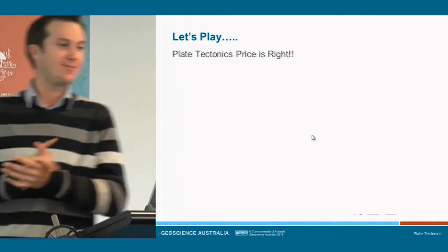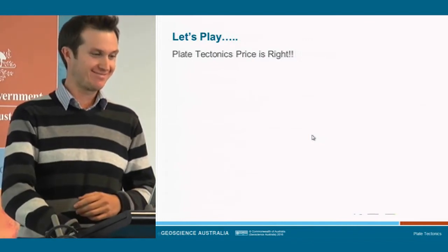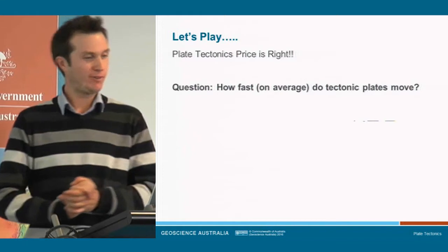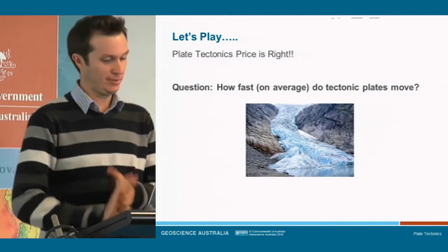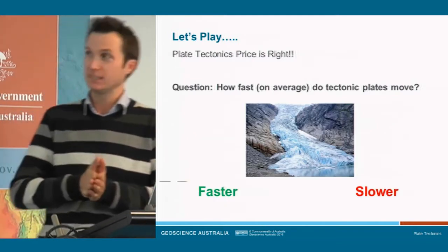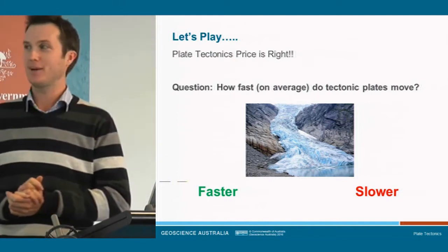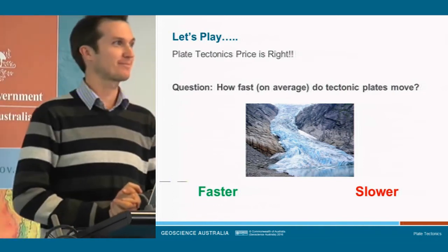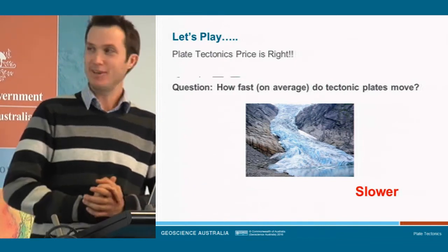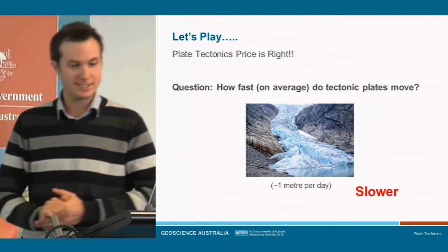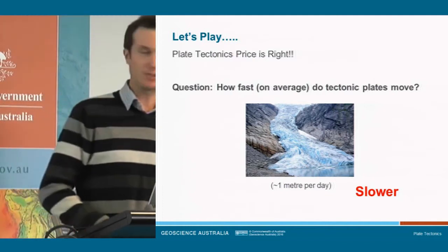Time for your red and green cards — we're going to play Tectonic's Price is Right. The question is: how fast, on average, do tectonic plates move? The first one: do you think they move faster or slower than glaciers? Hold up your green paper if you think faster, red if slower. Mostly red — and red is the correct answer. Glaciers move, on average, about one meter per day. So tectonic plates move slower than that.